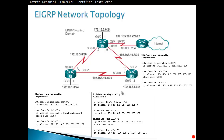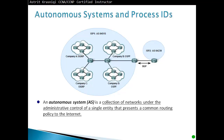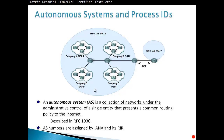Autonomous system and process IDs: an autonomous system, or AS for short, is a collection of networks under the administrative control of a single entity that presents a common routing policy to the internet. For example, an ISP has one AS and is in control of all the routing protocols within it. When one company talks to another, they usually use an exterior protocol like BGP. Interior protocols — EIGRP, OSPF, RIP version 2 — operate within an autonomous system number. This is described in RFC 1930. AS numbers are assigned by IANA and RIRs.